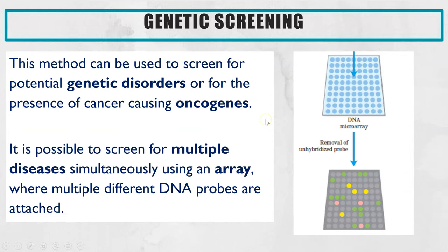You don't typically test for just one particular allele at a time. It's more common to have your DNA tested for a whole range of different potential genetic disorders or even some cancers. We call this a DNA microarray or just an array — this could be a glass slide with multiple different DNA probes added, and then you add your DNA samples on top, so it's much more efficient.